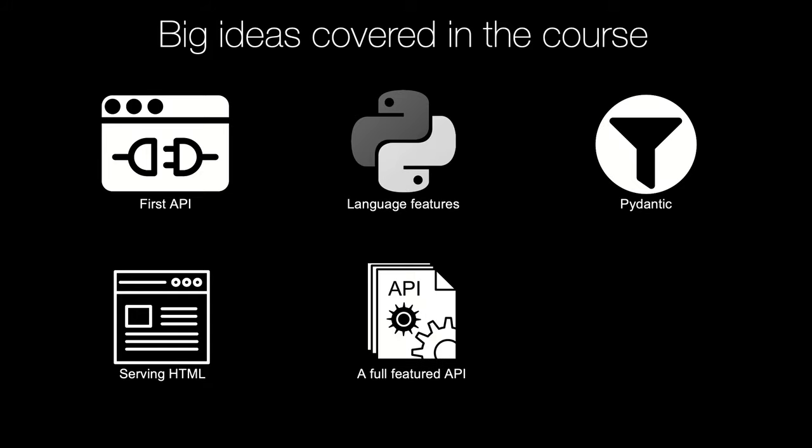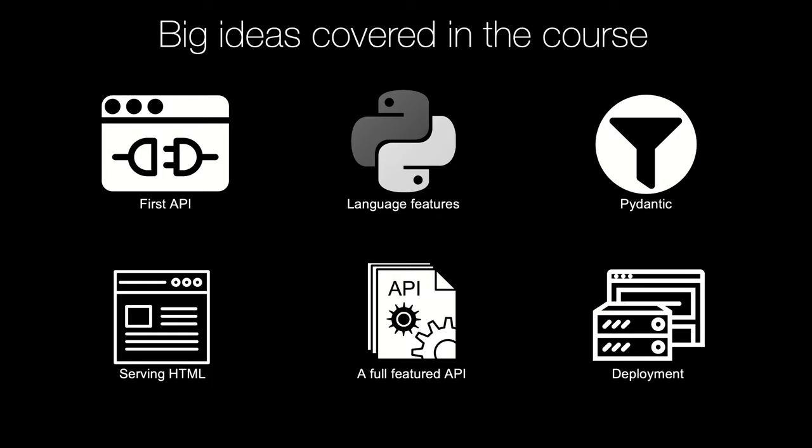After we get all this set up and in place, what we're going to actually do is build a much richer application throughout the rest of the course — a full-featured API that takes advantage of data exchange, data validation, async and await, calling external services, and all that kind of stuff. Then we're going to round out the course by deploying that full-featured API out on the internet on a virtual machine, setting up Linux to run production-grade FastAPI applications on some cloud host.